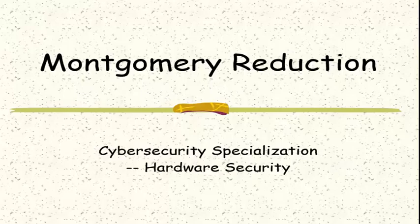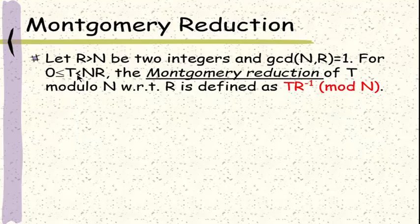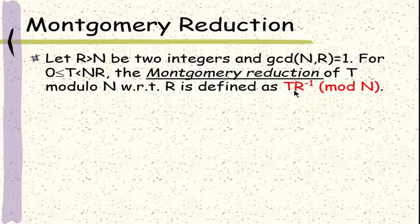We now learn another way to do fast modular multiplication. This method is known as Montgomery reduction. Let r and n be two integers that are relatively prime to each other, and r is greater than n. For any integer t which is greater than or equal to zero and less than the product of n and r, the Montgomery reduction of t mod n with respect to r is defined as the modular multiplication of t and r inverse mod n, where r inverse is the multiplicative inverse of r mod n, which means r times r inverse equals one mod n.